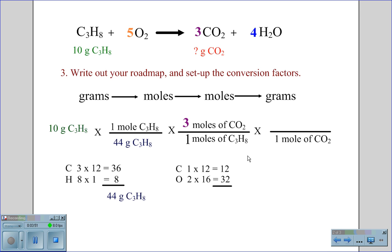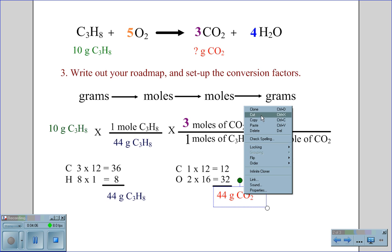Again, carbon is 12 from the periodic table. One atom times 12 becomes 12. Oxygen, we have two atoms. The mass of oxygen is 16. Two times 16 is 32, which gives us a mass of 44 grams of carbon dioxide.